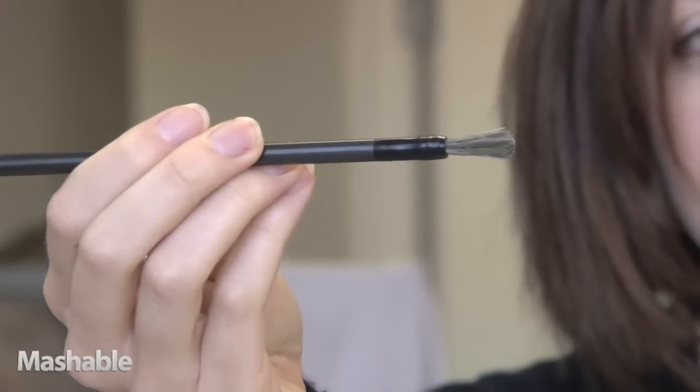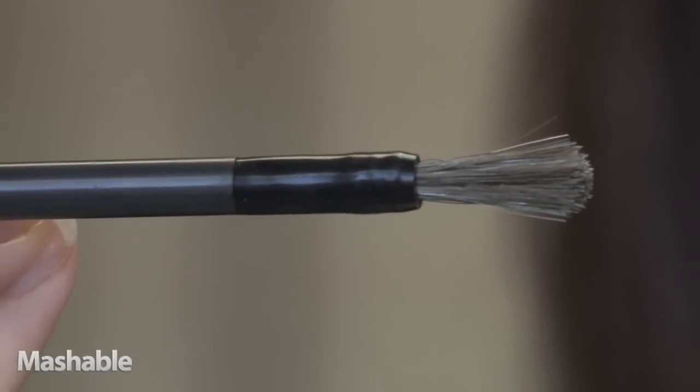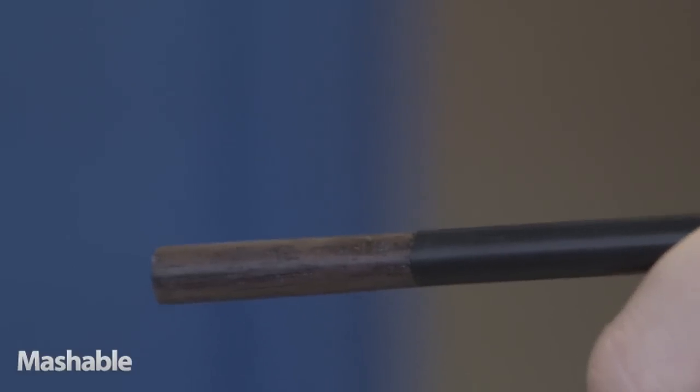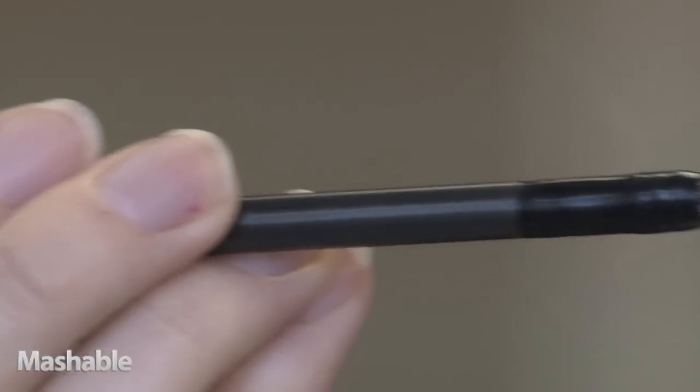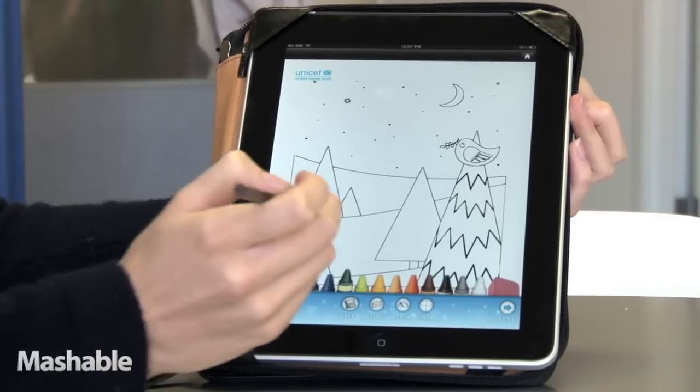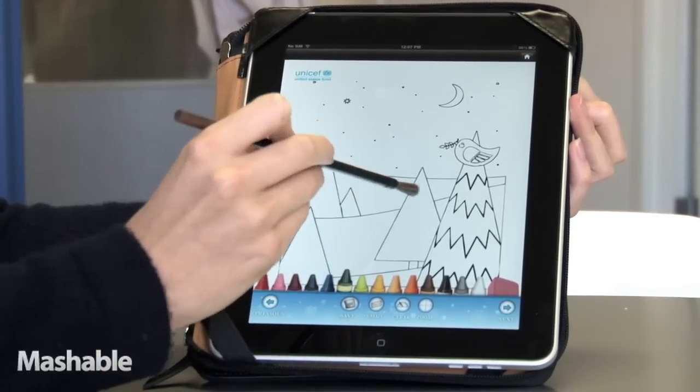So the brush is a combination of old school and new school. It's got natural sable fibers, which many watercolor artists will be very familiar with, as well as synthetic fibers which were chosen for their conductive properties. We'll start off with UNICEF's children's coloring book. We'll choose green, color in the tree.